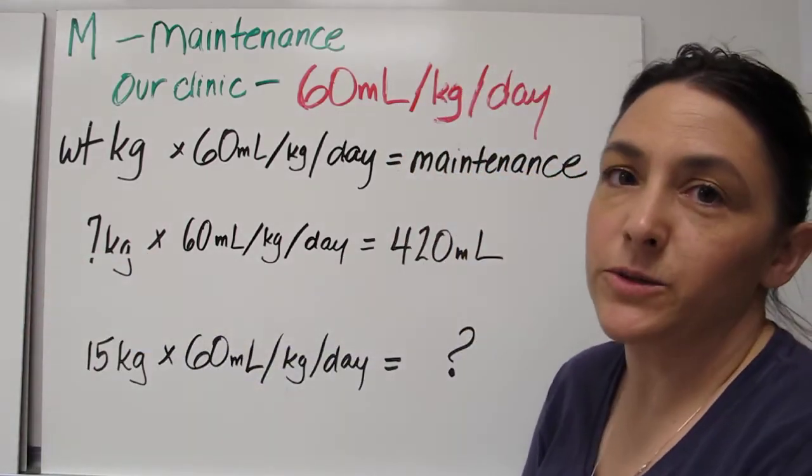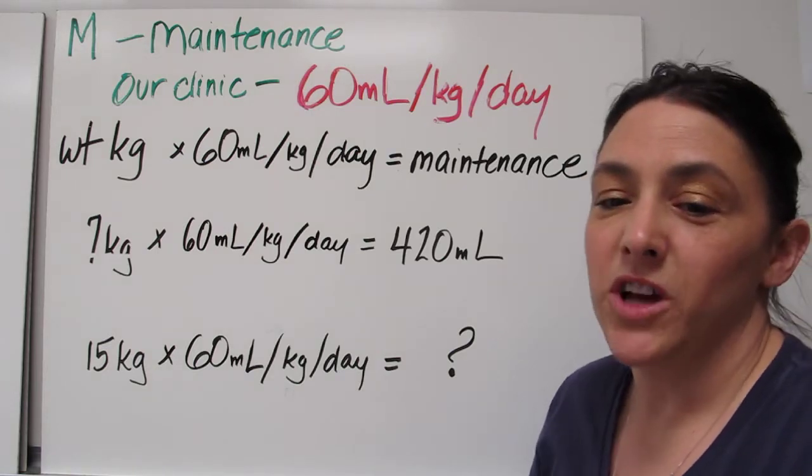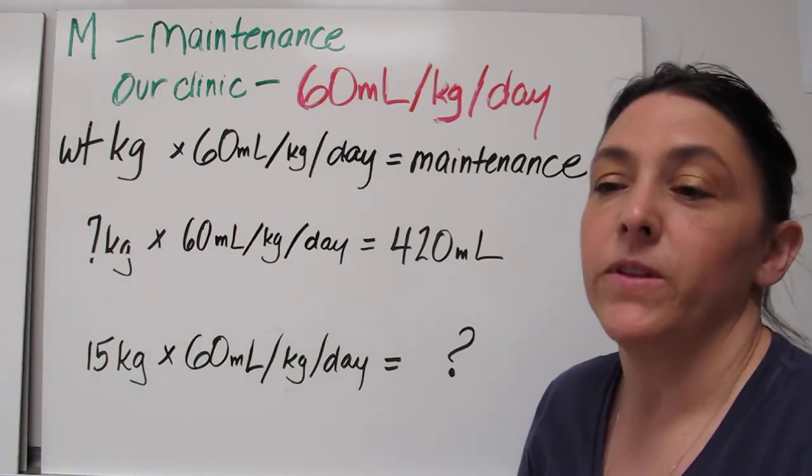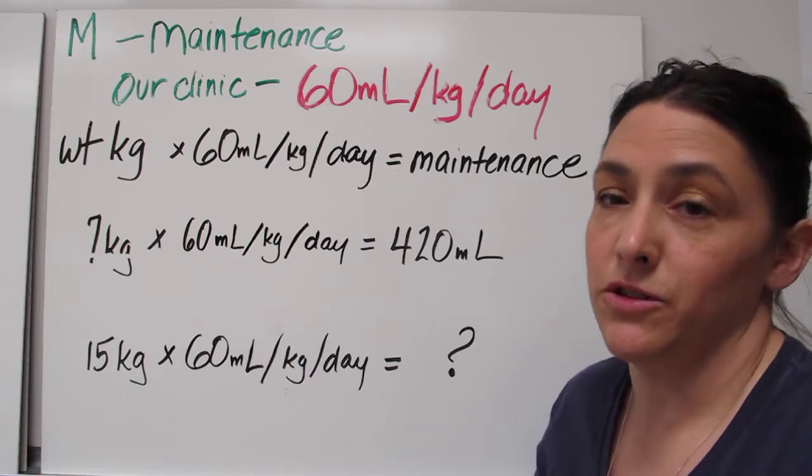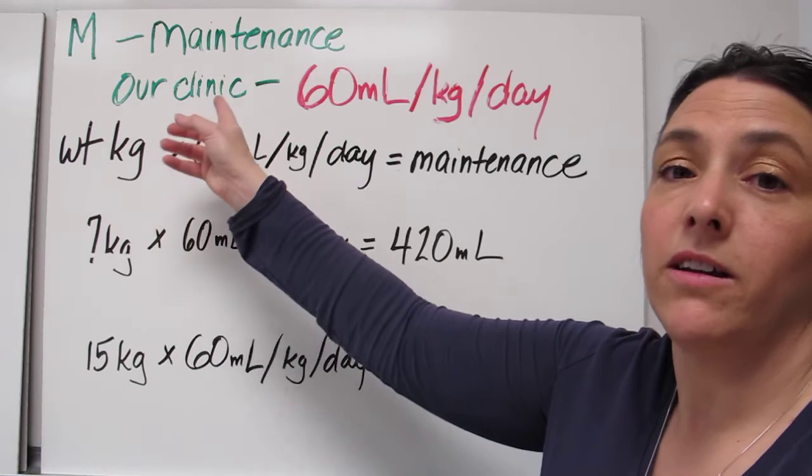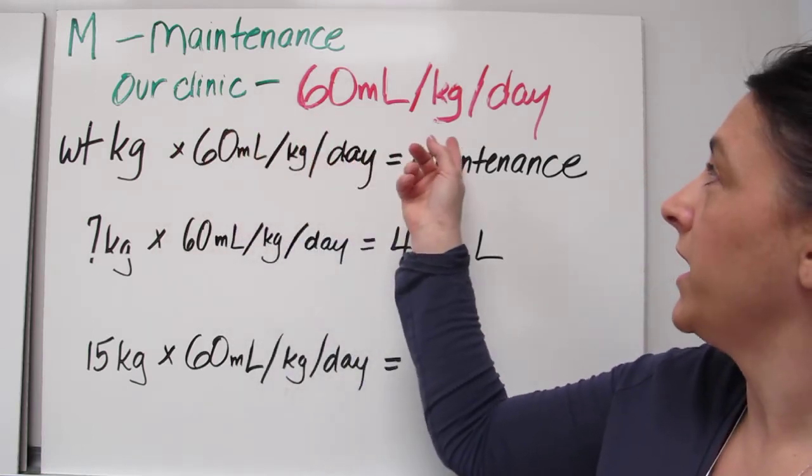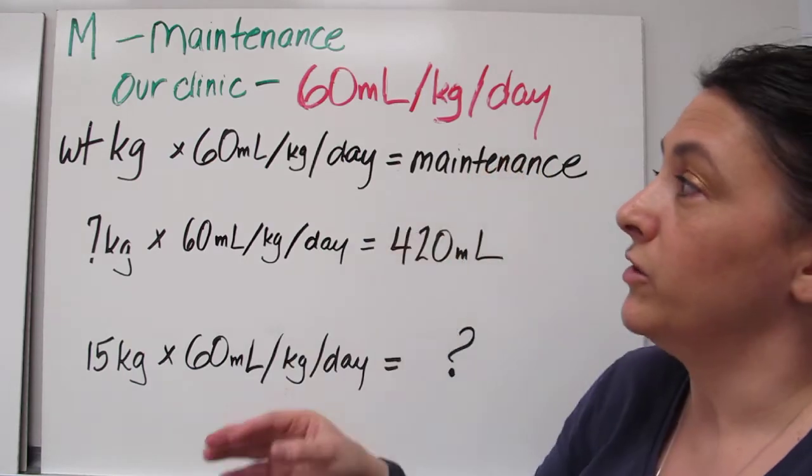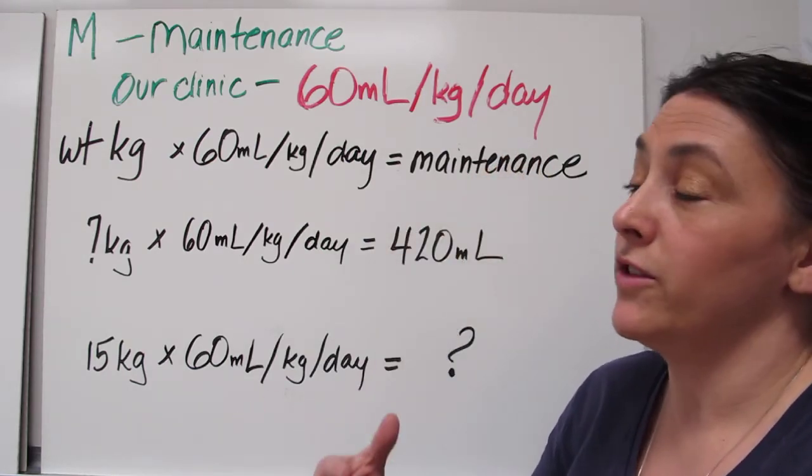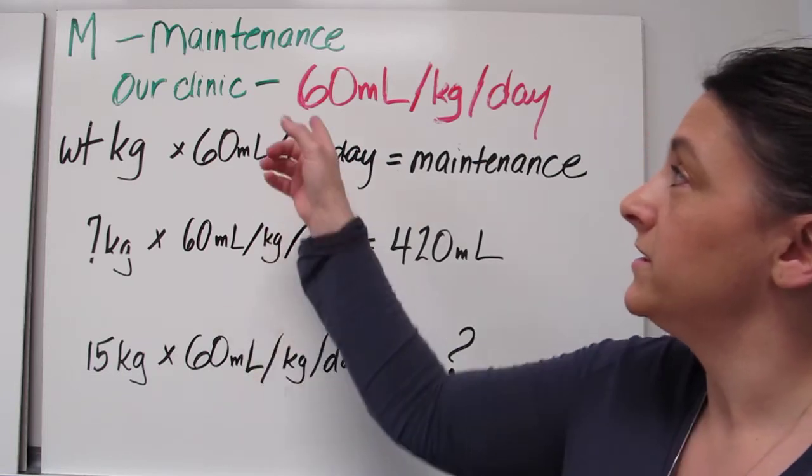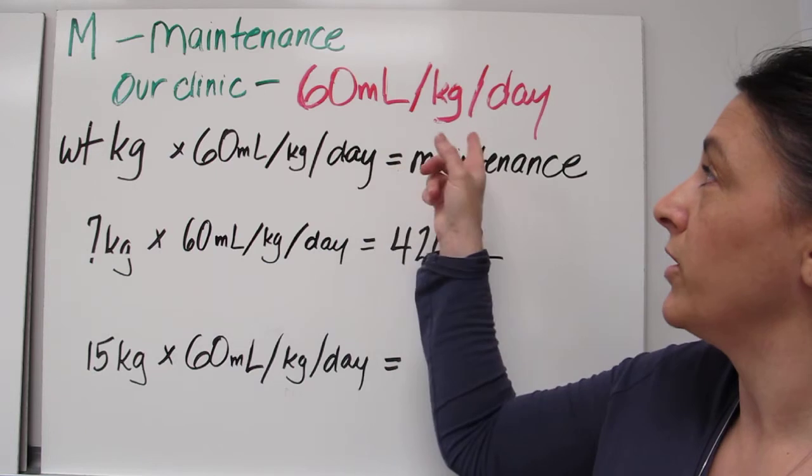So next we are going to calculate maintenance. So maintenance is what you would just give a dog or a cat just if you needed to give fluids. This is what they need to survive. In our clinic here at Clinic Globe, we use 60 mL per kg per day. So if I ask you to calculate out a deficit and the replacement fluids they need, this is going to always be your constant, the 60 mL per kg per day.